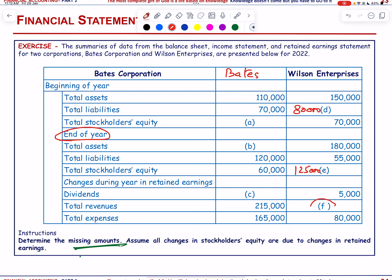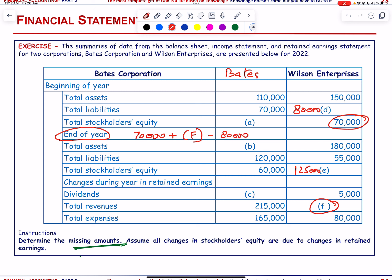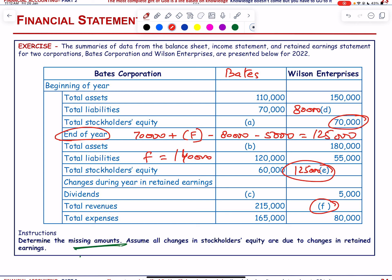For Wilson, we do not know the revenue (F). Beginning equity = 70,000; add revenue F; subtract expenses 80,000; subtract dividend 5,000; equals ending equity 125,000. Solving: 70,000 + F − 80,000 − 5,000 = 125,000; therefore F = 140,000. Total revenue = 140,000.